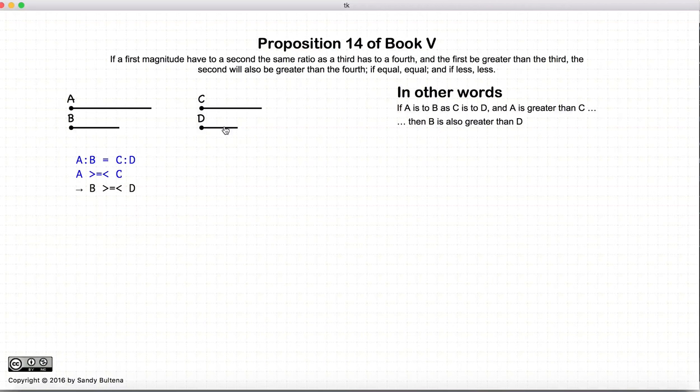and they are equal. And this proposition states that if a is larger than c, then b is also larger than d.